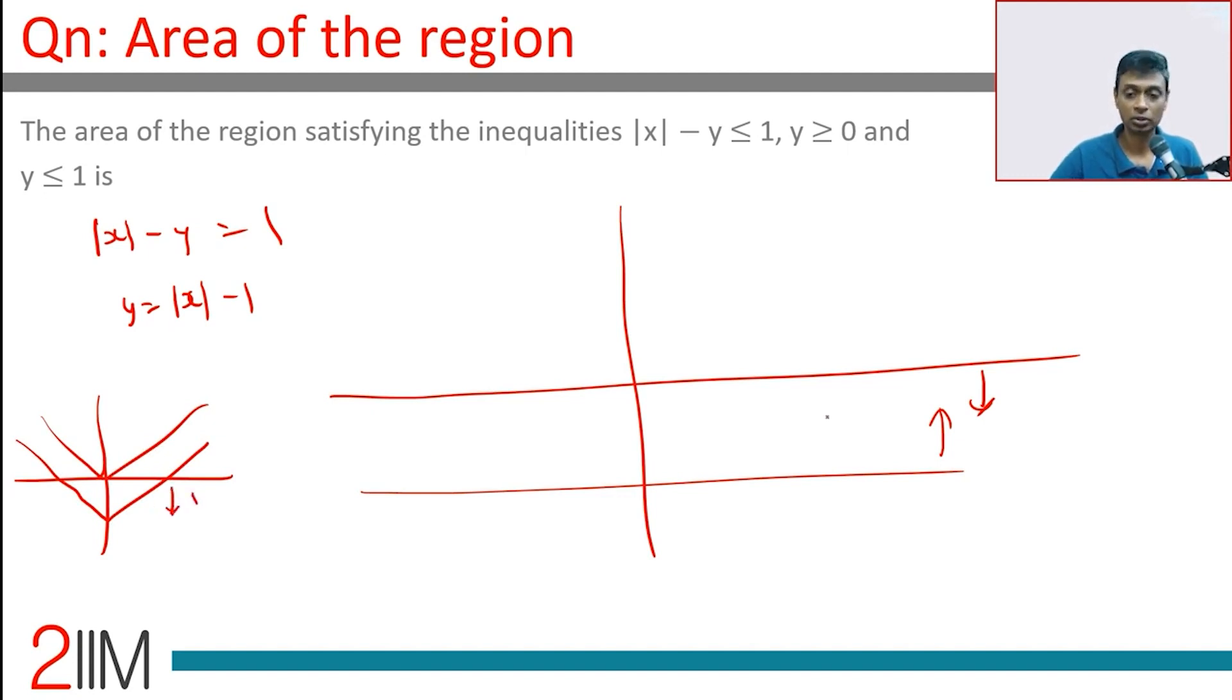So this is (0, 0), this is the x-axis, this is the line y = 0, this is the line y = 1. We're talking about this band here, and inside that band.